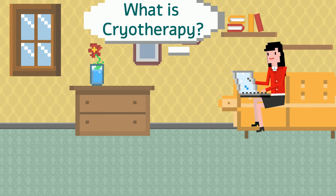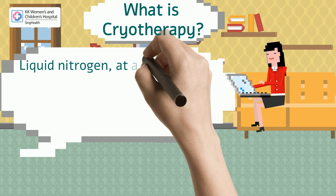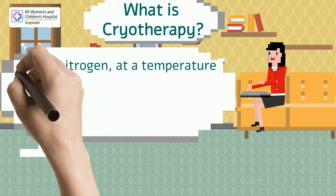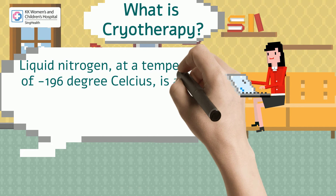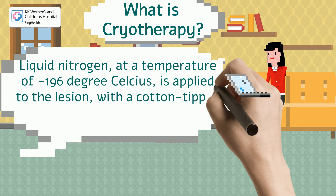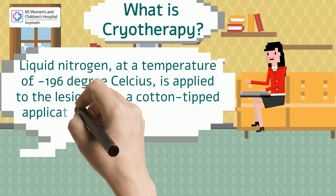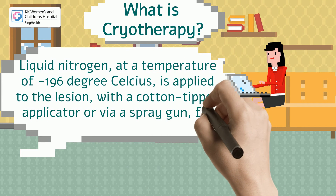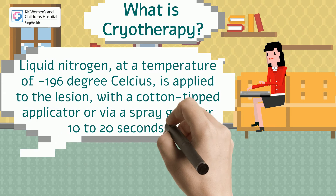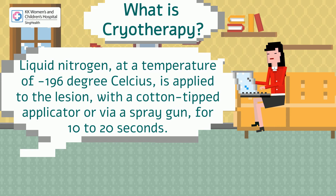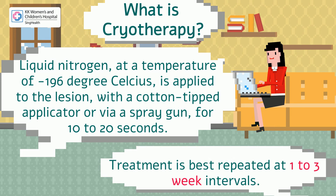What is cryotherapy? Liquid nitrogen at a temperature of negative 196 degrees Celsius is applied to the lesion, with a cotton-tipped applicator or via a spray gun, for 10 to 20 seconds. Treatment is best repeated at one to three week intervals.